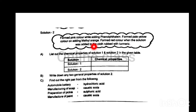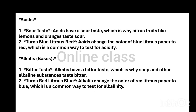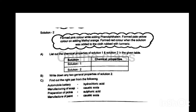Two solutions have been tested. Both have the same properties. Solution 1 and Solution 2. Solution 2 is alkaline. Solution 1 is acid. Write down two general properties of Solution 2.